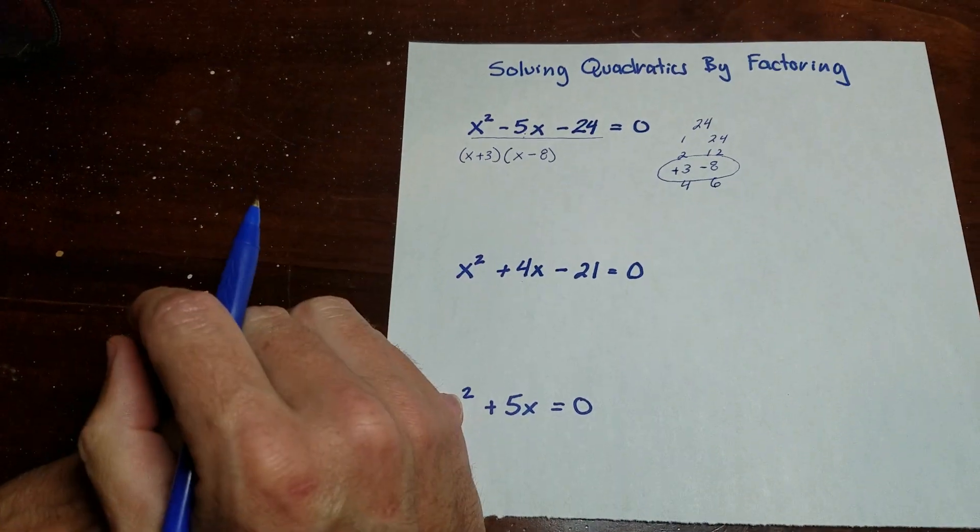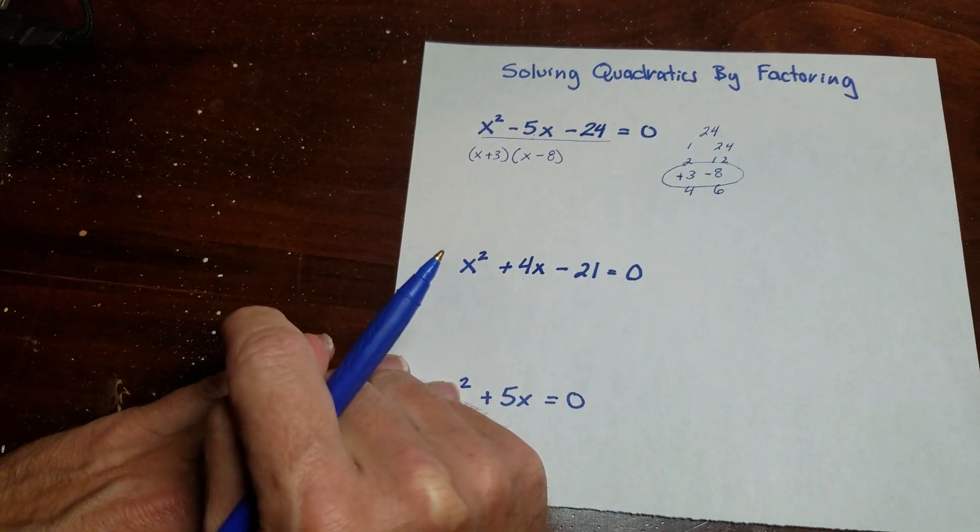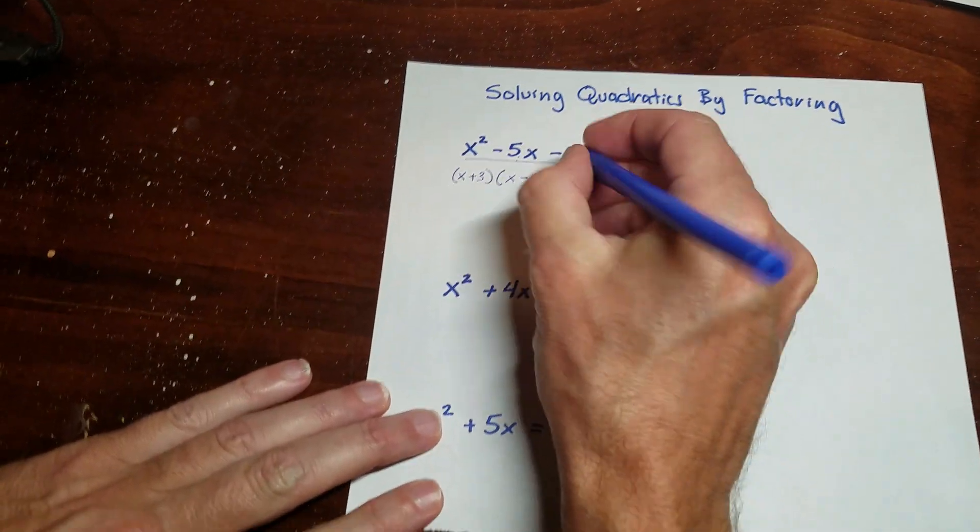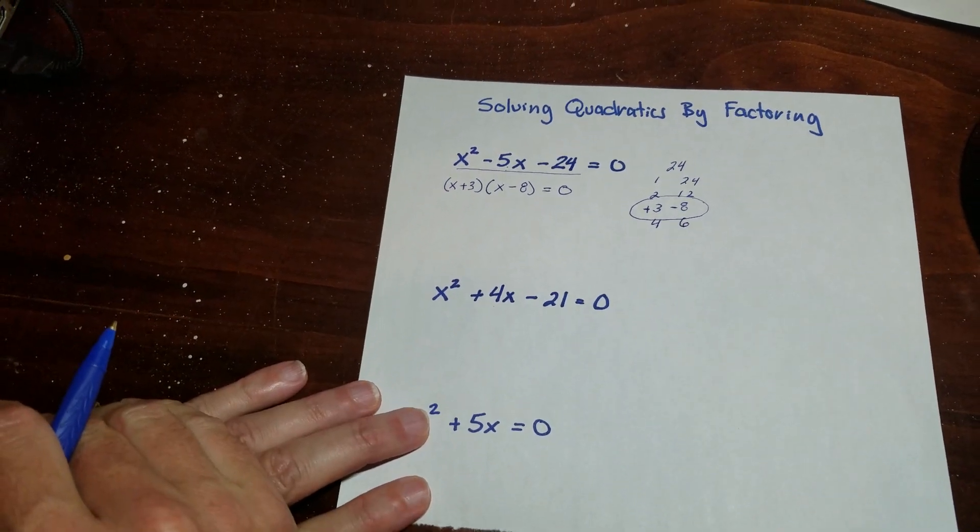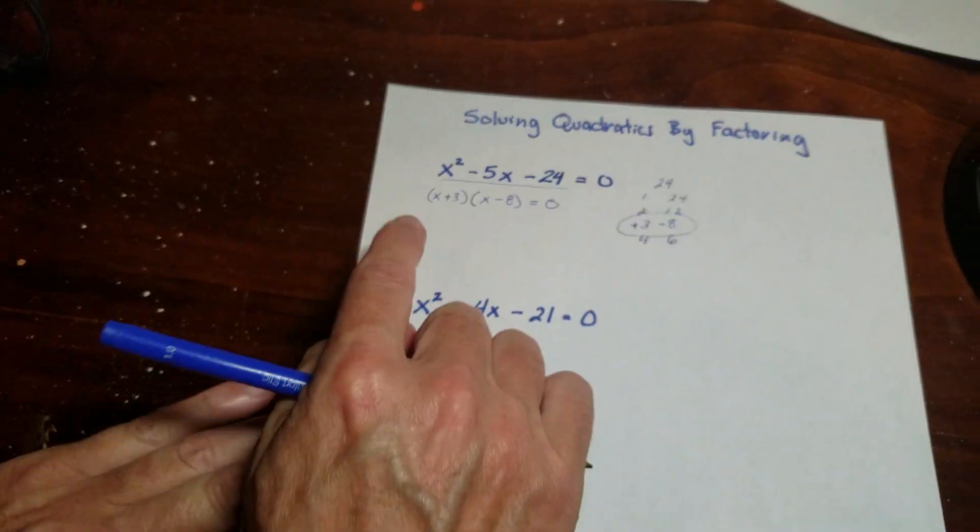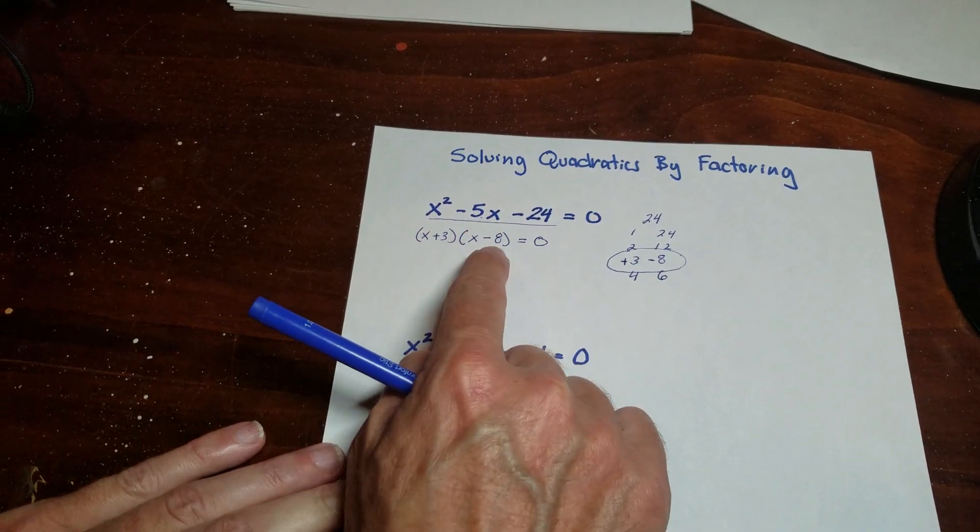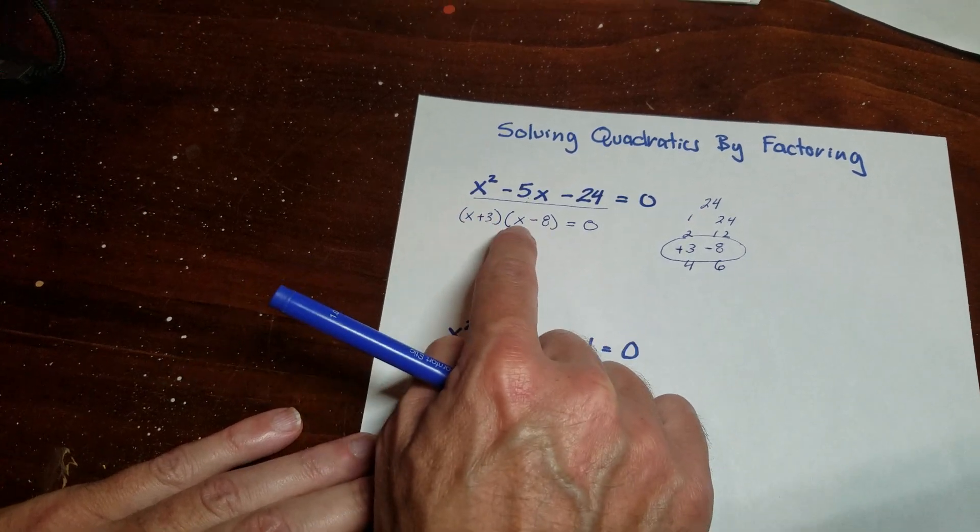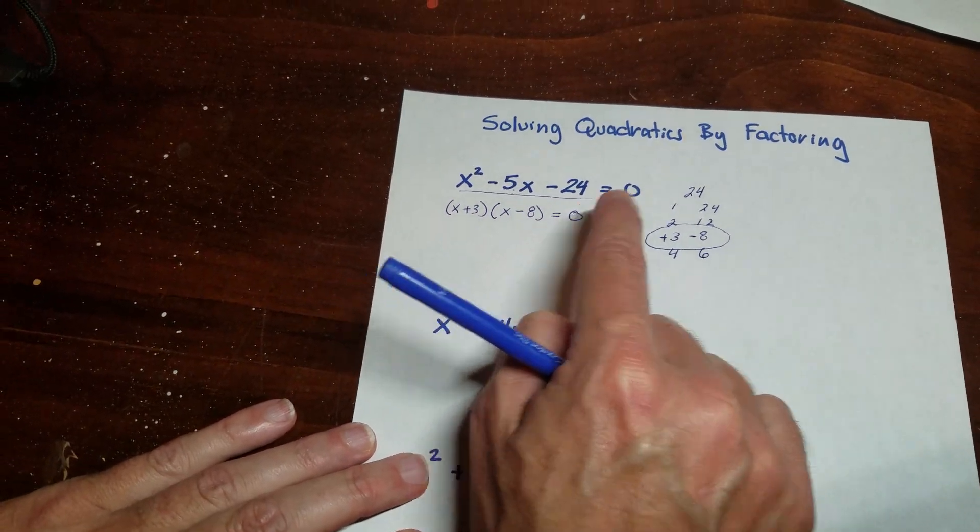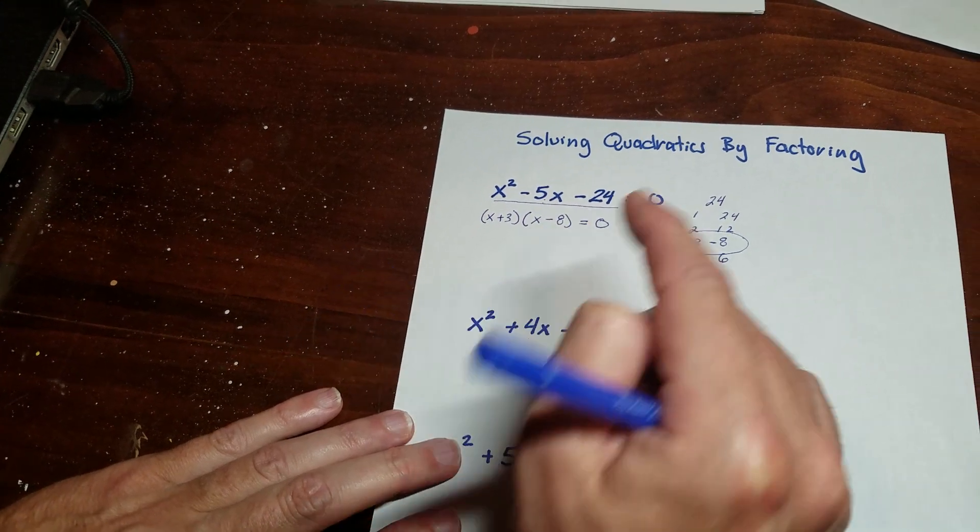Now the difference between this and what you were doing, you'll notice this is an equation, not an expression. So I'm going to include the equals 0. So I'm going to stop right here and explain something to you. What this says is that this number, which is represented by x plus 3, and this number, which is represented by x minus 8, when they're multiplied together, they're equal to 0. So what we know is that this number or this number is equal to 0.